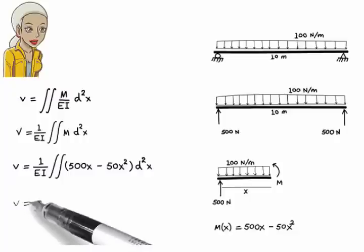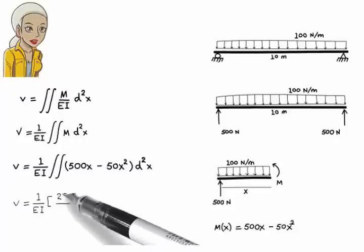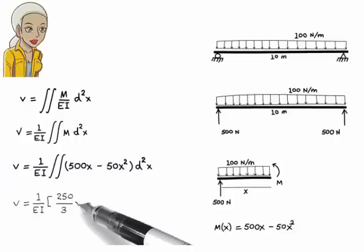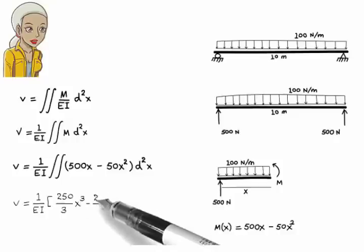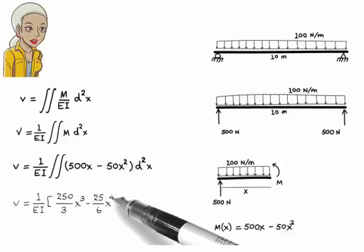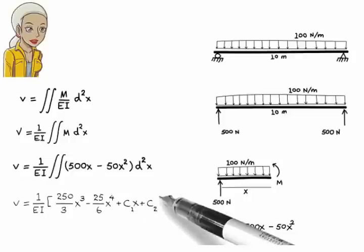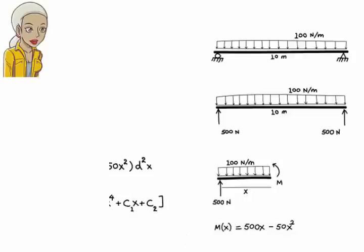Integrating 500x minus 50x squared twice, we get, v equals 1 over ei times 250 over 3 times x cubed minus 25 over 6 times x to the power of 4 plus c1 times x plus c2.